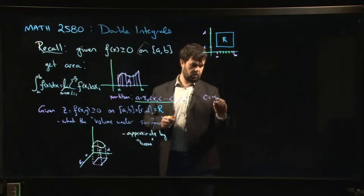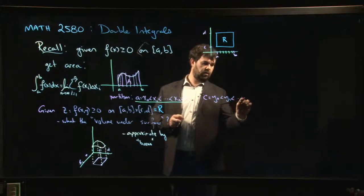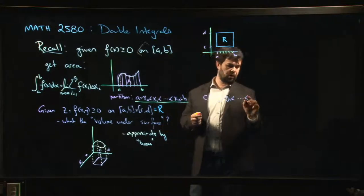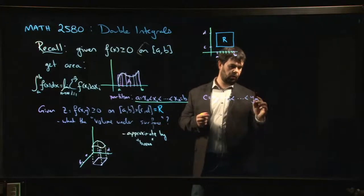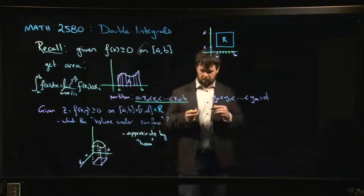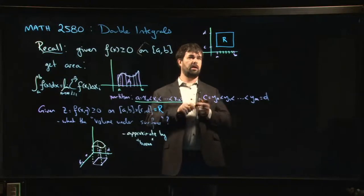So we can say, well, let's say C is going to be y0, and we'll introduce points y1, y2, and so on, up to, well, maybe we don't use the same number of points that we used over there, so maybe we'll call this one ym. And that'll be the last point, equal to D. So now we've divided things up here.